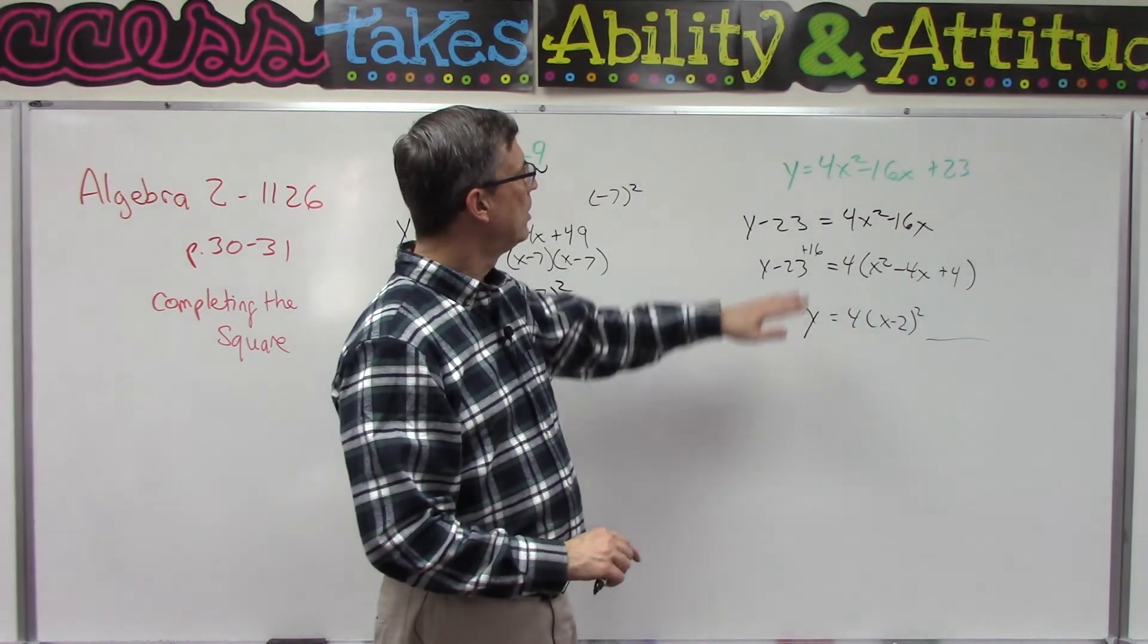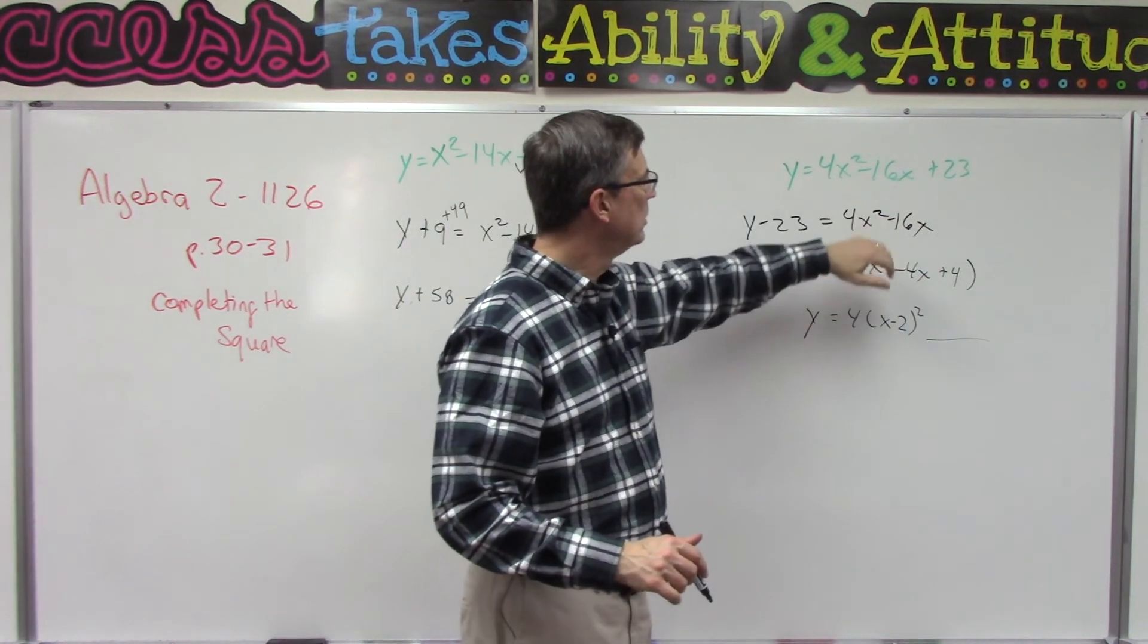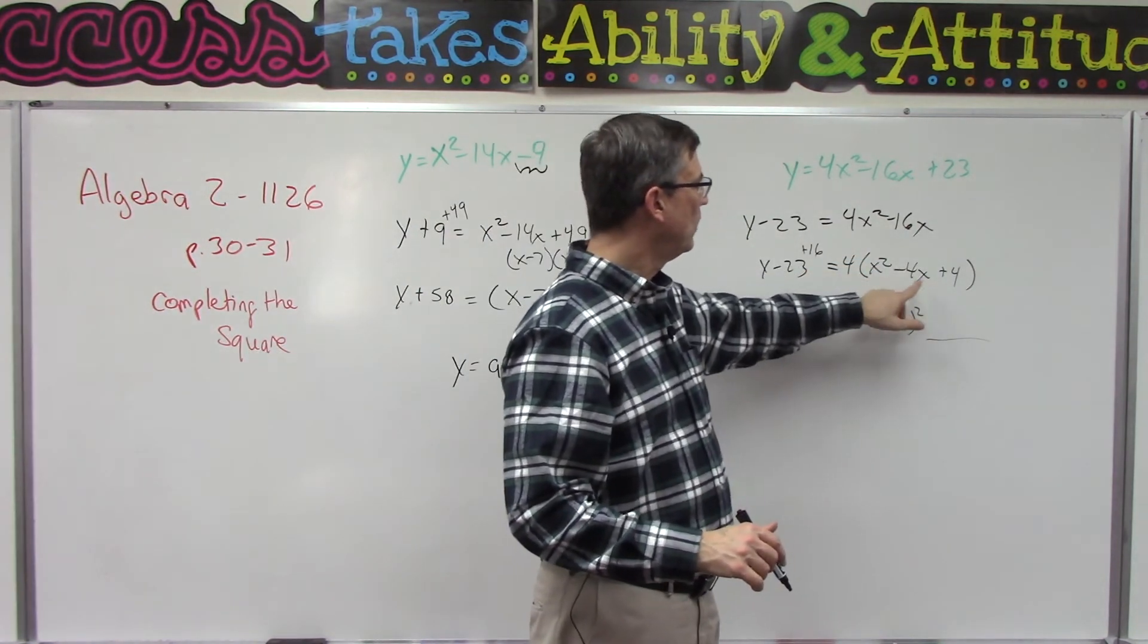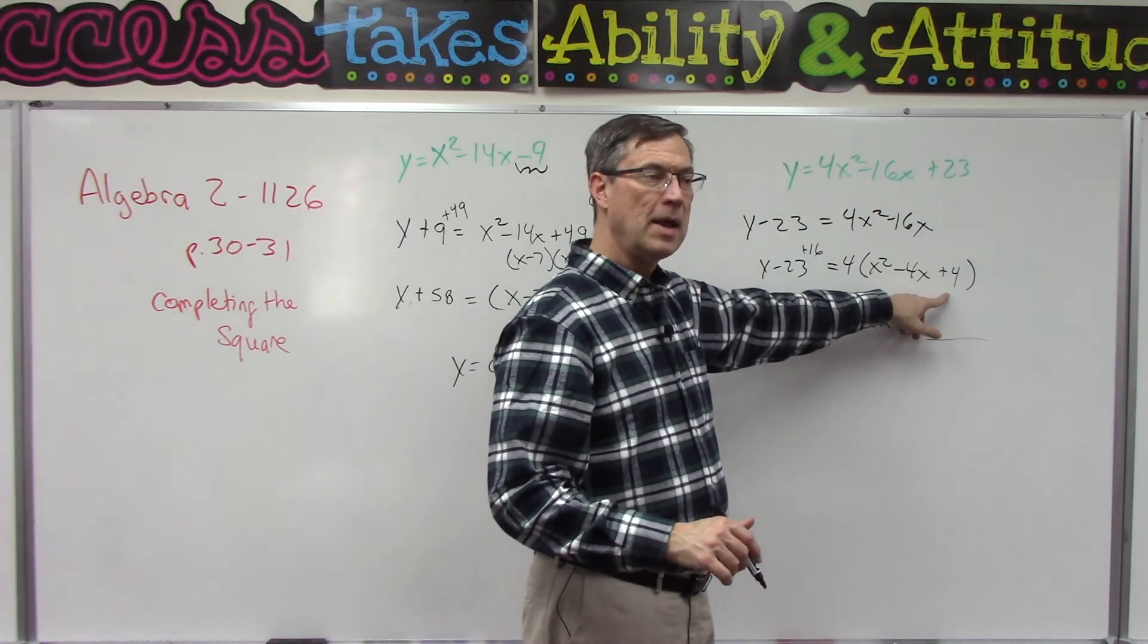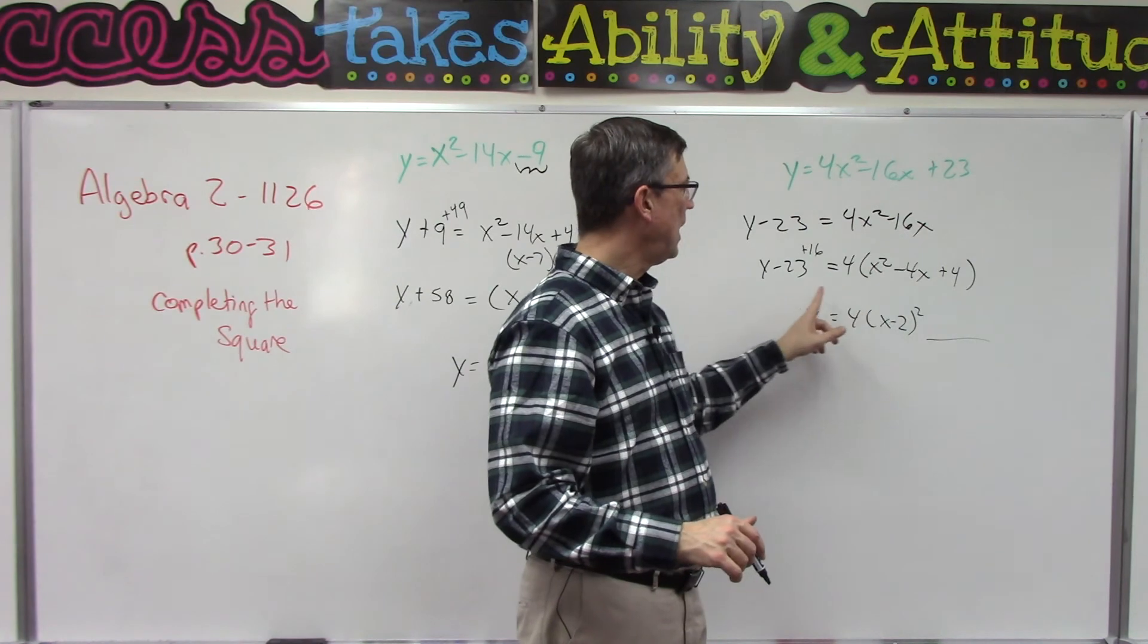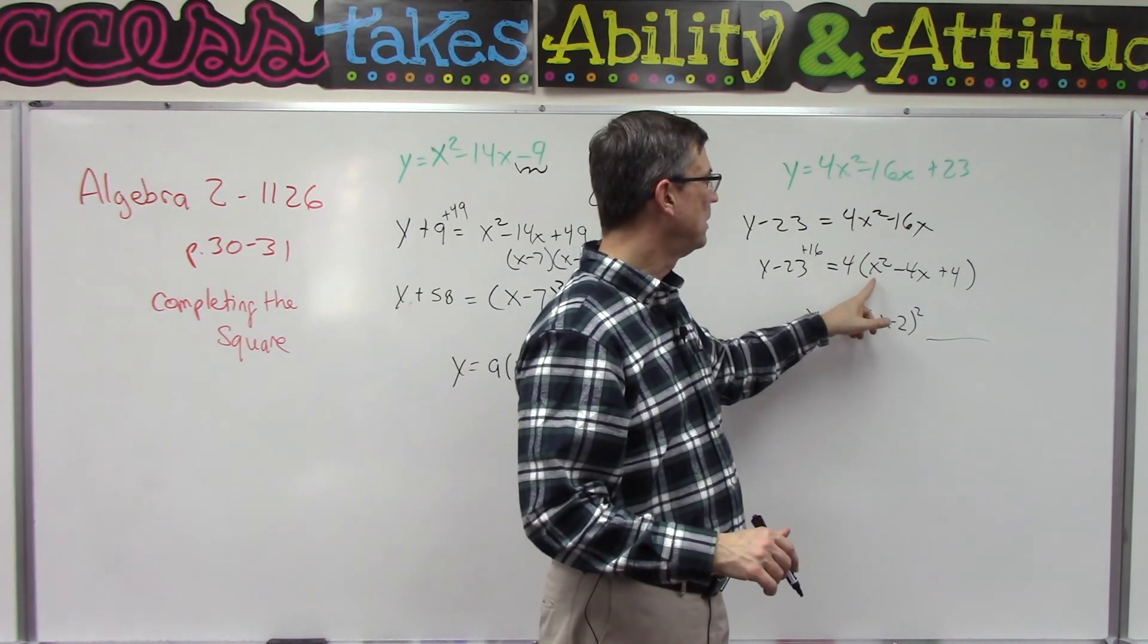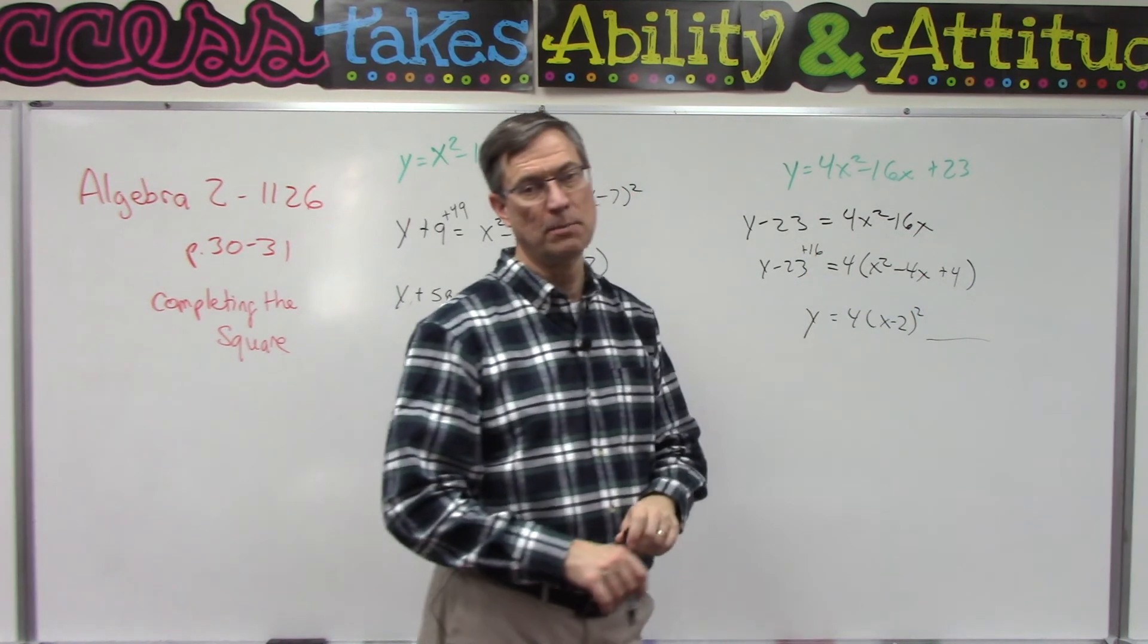But the hard part is right here: remembering that we have to factor out the common factor—in this case it's 4—and then when you complete the square, half the middle term squared gets added here. And you might be tempted to say, 'Oh, I need to add 4 over here,' but we have to remember that the 4 is actually inside the parentheses, so 4 times 4 is 16, and that's what gets added to both sides.